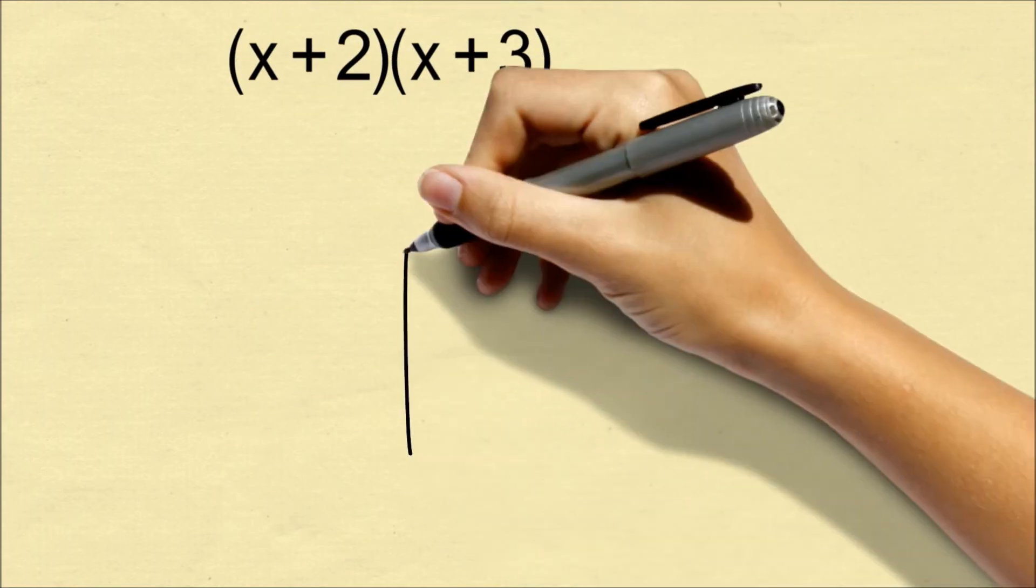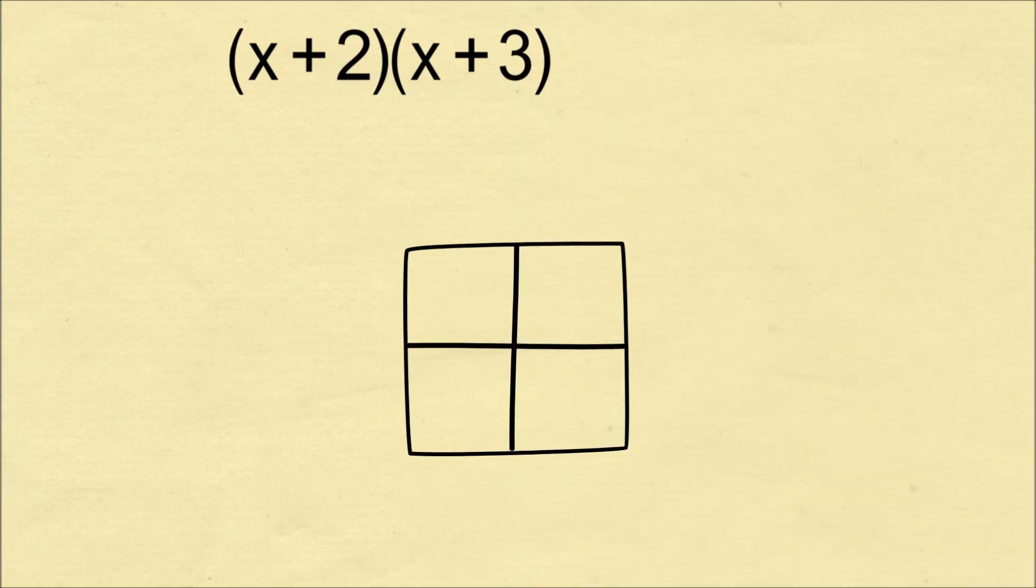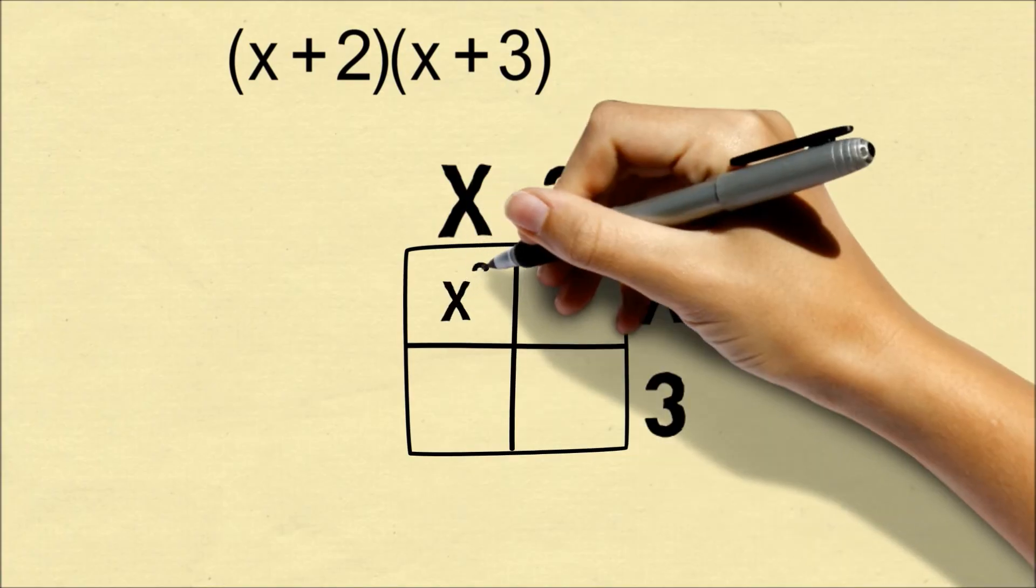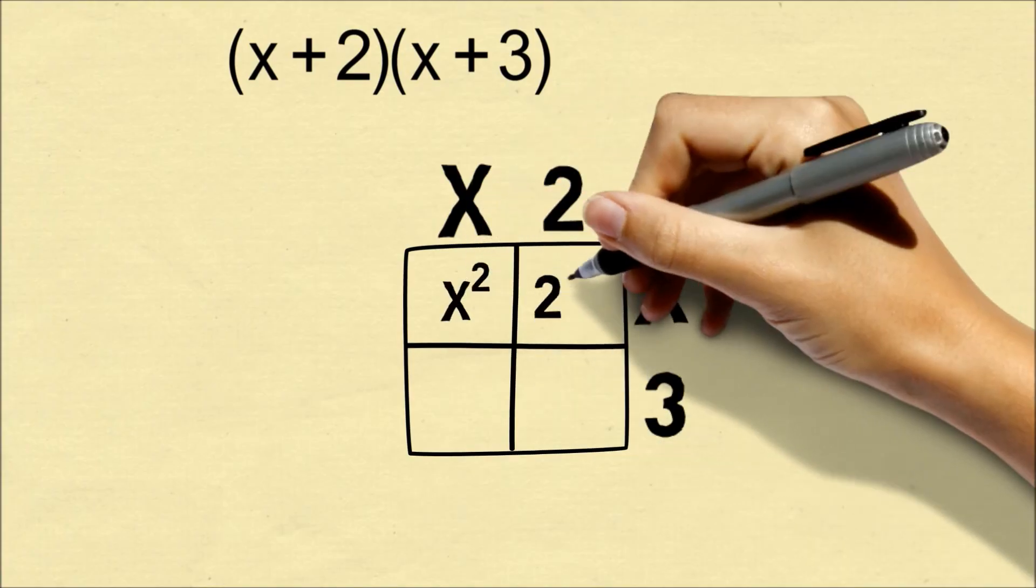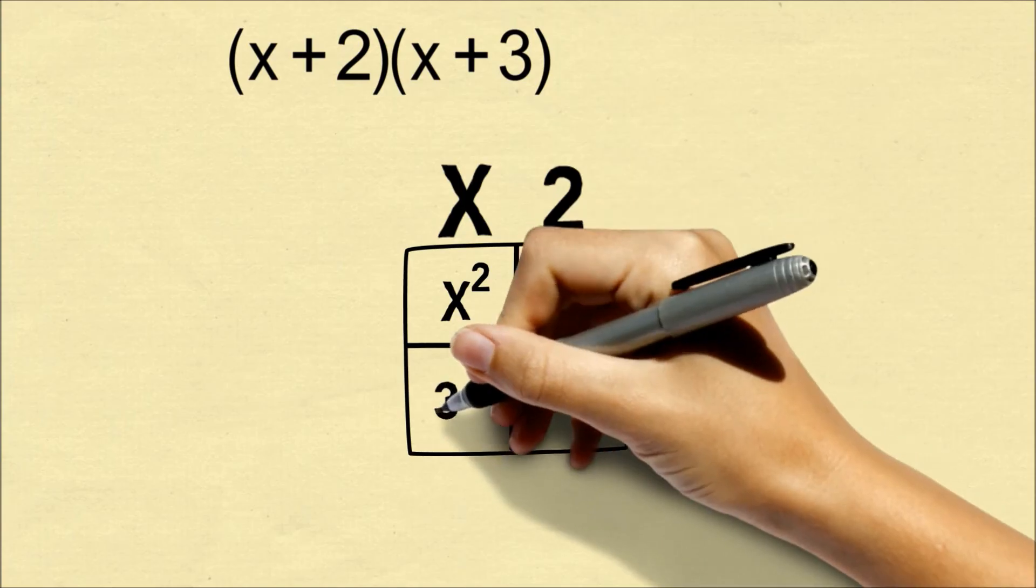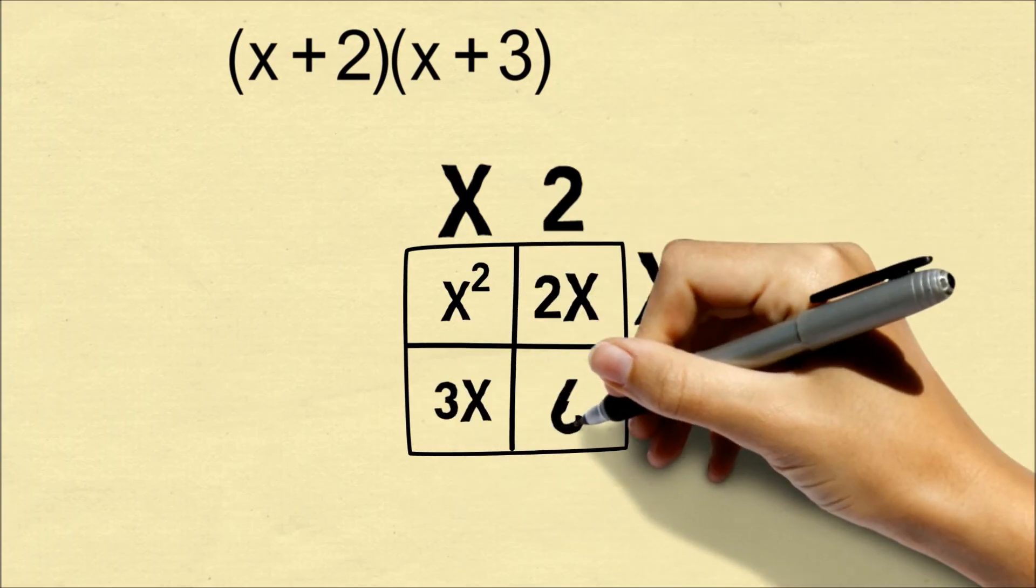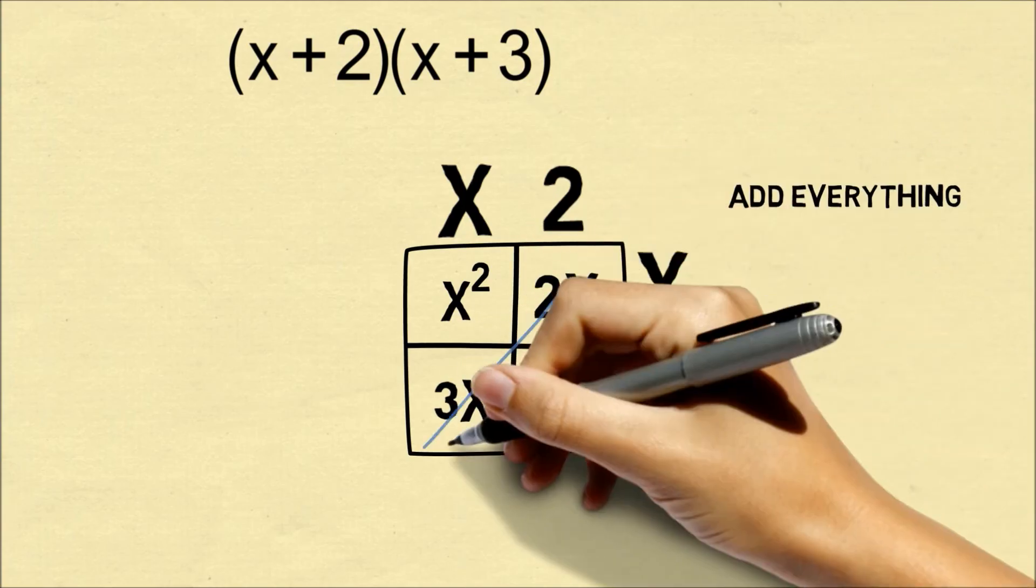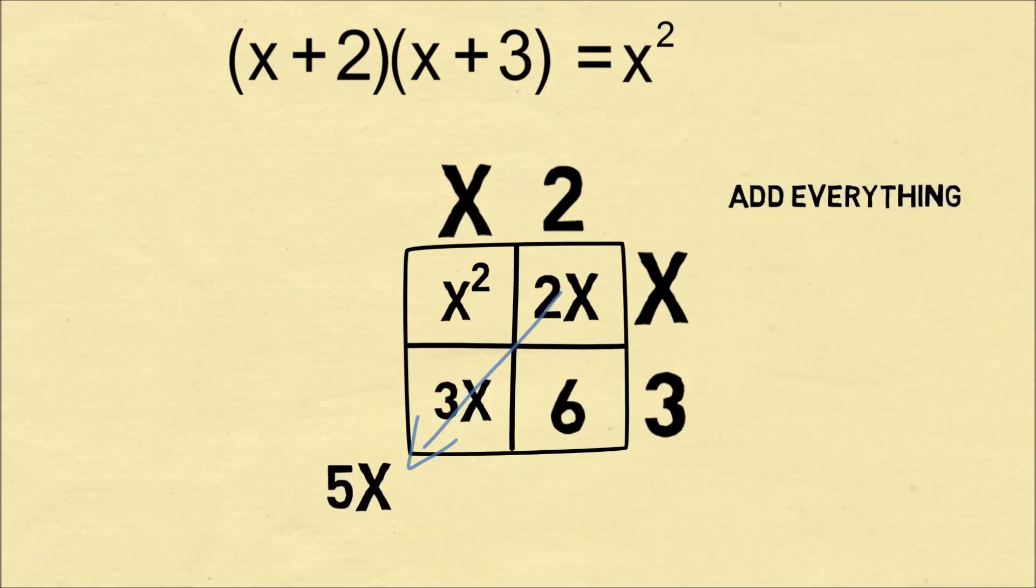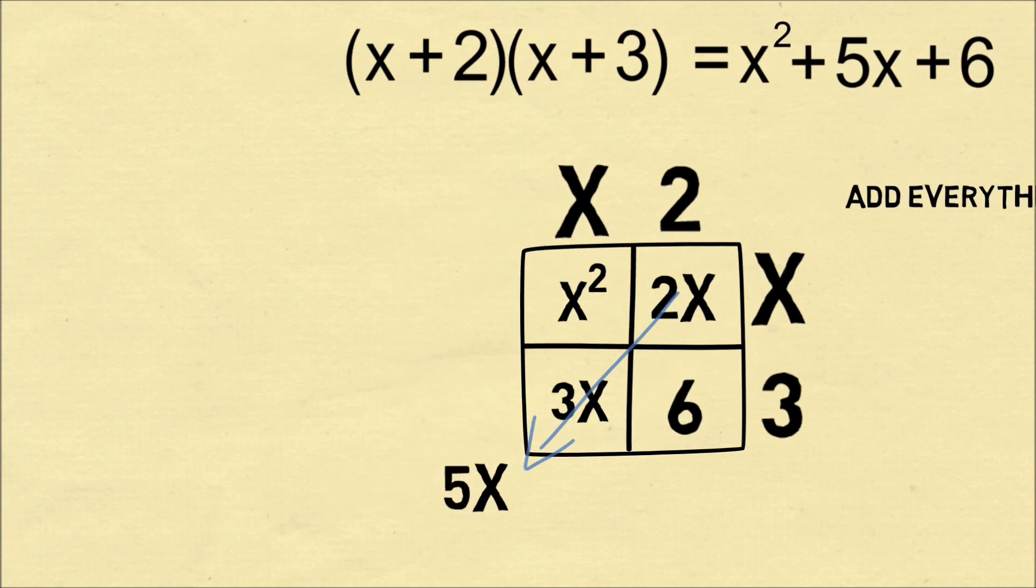We can also use lattice multiplication for polynomials. When we do x plus 2 times x plus 3, we write x plus 2 in the row and x plus 3 in the column. x times x is x squared, 2 times x is 2x, x times 3 is 3x, and 2 times 3 is 6. We add everything together, grouping together the x terms, and we have x squared plus 5x plus 6.